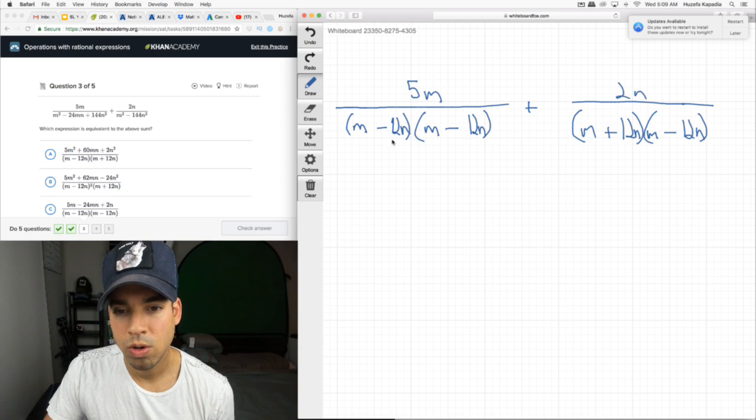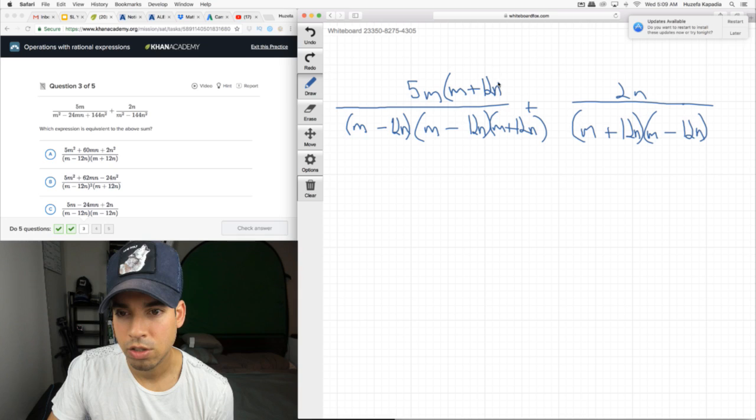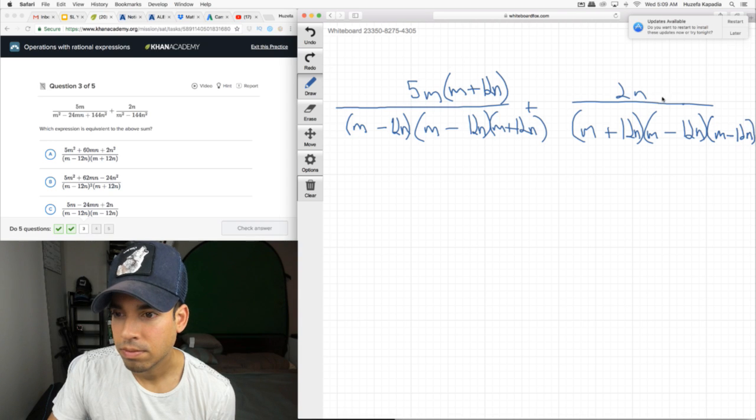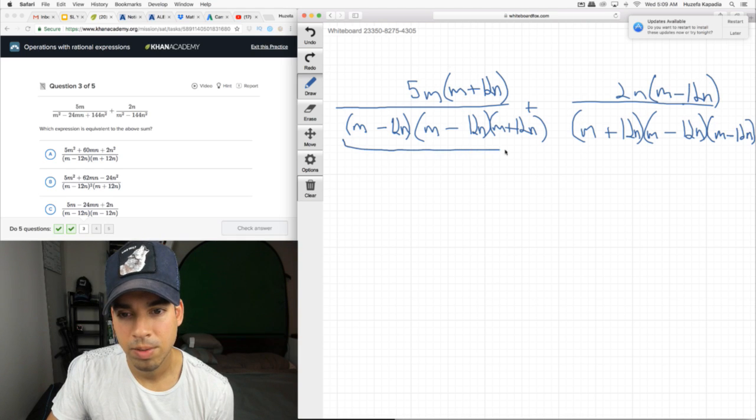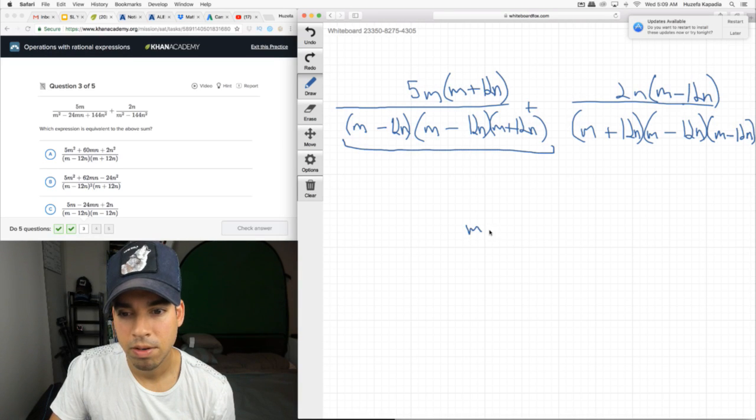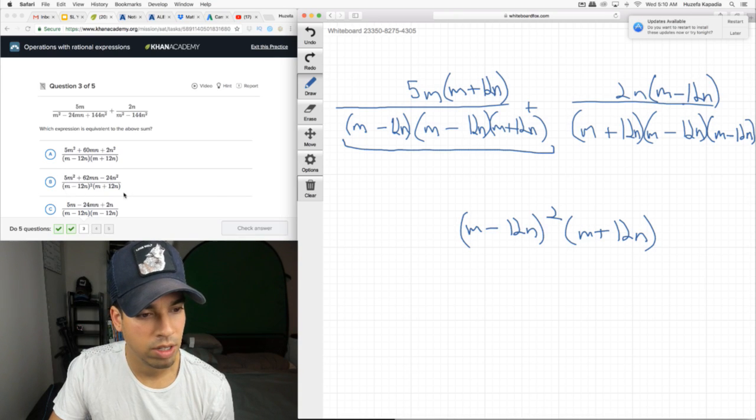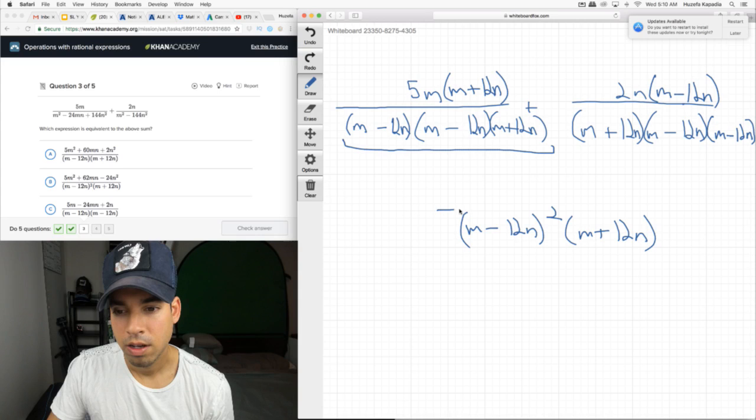Now, look, these are almost the same denominators, but a little different. To make them the same, well, this one has an M plus 12N, so we need that over here. Get our least common multiple. But, I've got to add that to the, multiply that against the top. I can't just multiply it against the bottom. It would change the fraction fundamentally. Here, we just need another M minus 12N. M minus 12N. All right, there we go. Now, we have this nice common denominator down here.